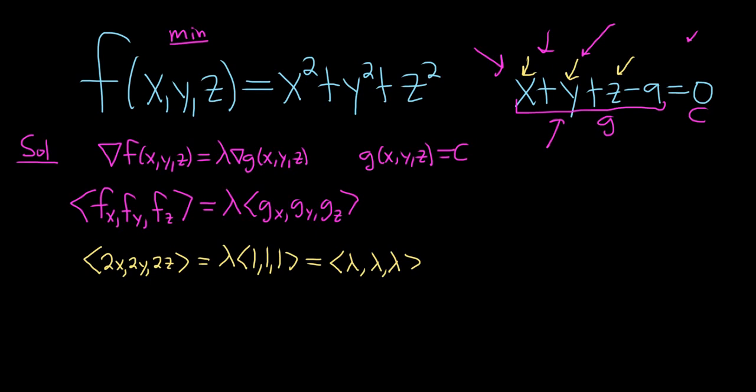These vectors are equal, which means that lambda is equal to 2x and lambda is equal to 2y and lambda is equal to 2z. But they're all equal to lambda, that means they're all equal to each other. Divide by 2 and you get x equals y equals z.